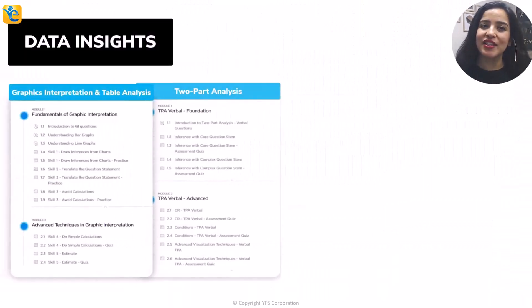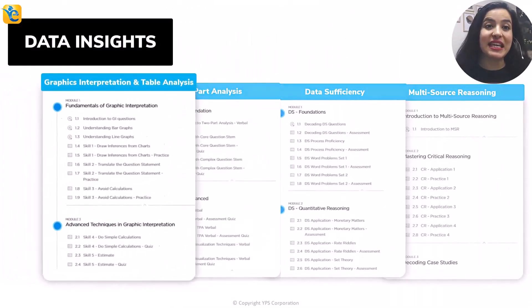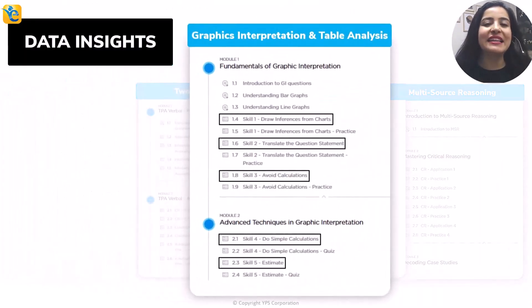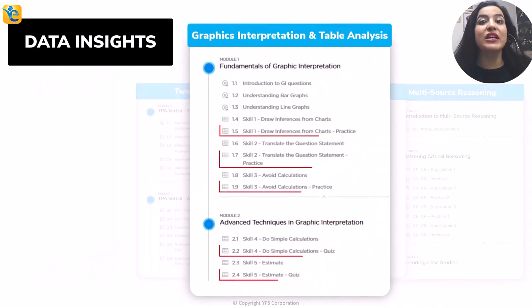At this point, let me ask you this. Could you have arrived at the approach of solving this question with this level of clarity had you not spent the effort in thoroughly understanding the information presented? Such is the power of the process of owning the data set. And because this skill may not come naturally to many of you, we have created a course architecture that ensures that we teach you this skill through every guided quiz in the EGMAT DI course and we reinforce the same in every practice quiz.